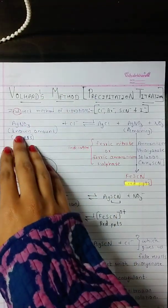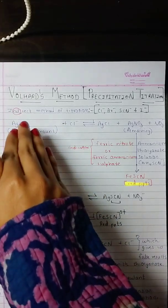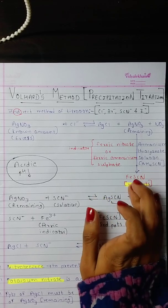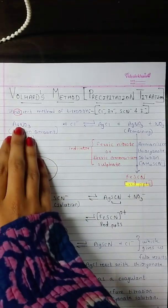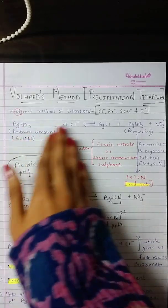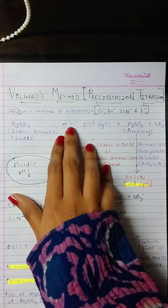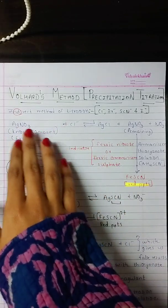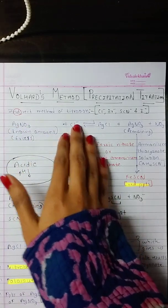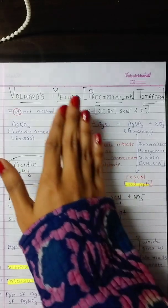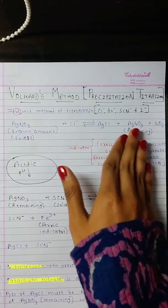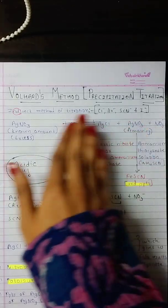Here, AgNO₃ will be used as a precipitating agent, and the endpoint will give us FeSCN, which are red precipitates. An excess known amount of silver nitrate, which is the precipitating agent, is used to determine the concentration of, say, chloride. The chloride ions react with AgNO₃ to give silver chloride. Whatever amount of chloride ions are present will form silver chloride. Once the chloride is used up, excess AgNO₃ remains, and nitrate ions are there to balance the reaction.